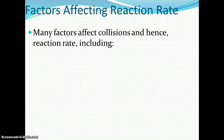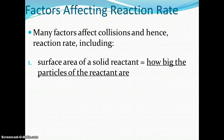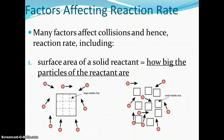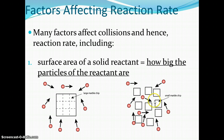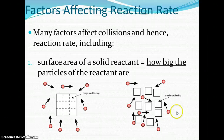Many factors affect reaction rate. The first is surface area of a solid — this is how big the particles of the reactant are, and it deals with how much space there is between particles for the other reactant to react with. In this picture, the marble chip all in one piece has only a little surface area, because the surface area is on the outside. Once you smash the particles into smaller pieces, there is more surface area, and four sides of each particle can be reached. So the side with more surface area is going to react faster, because there's more area for reactant particles to come in and react.